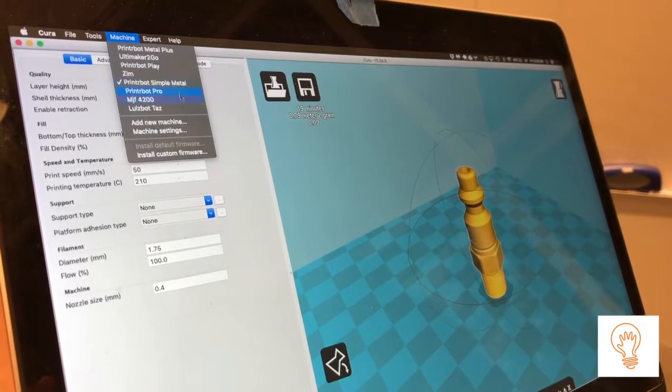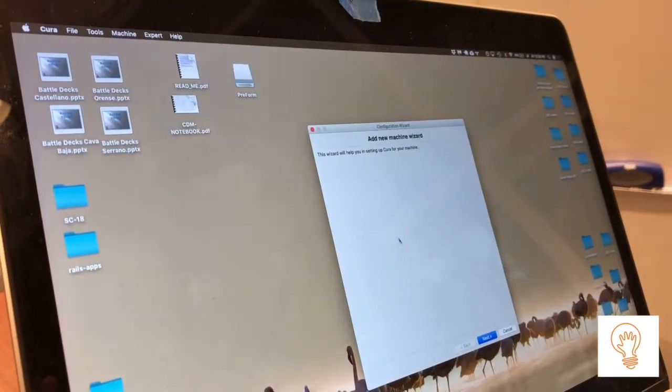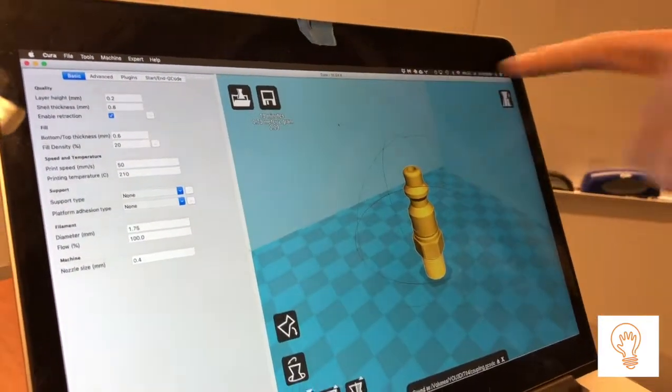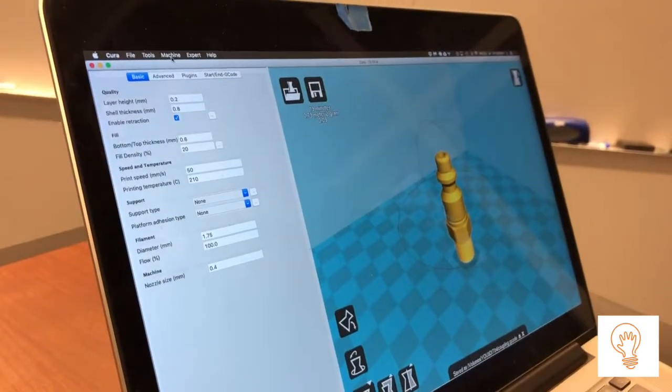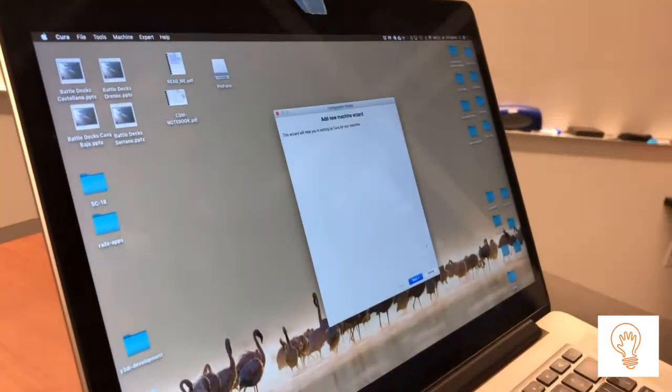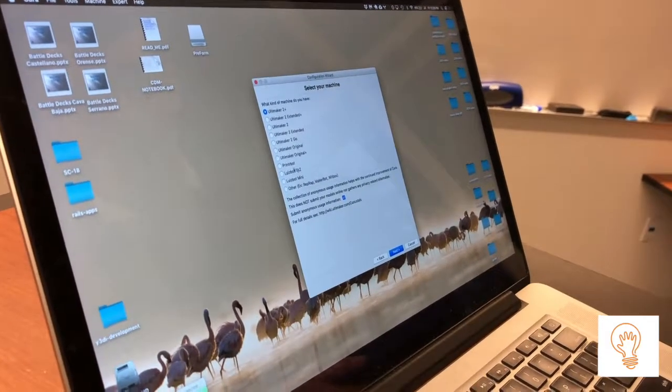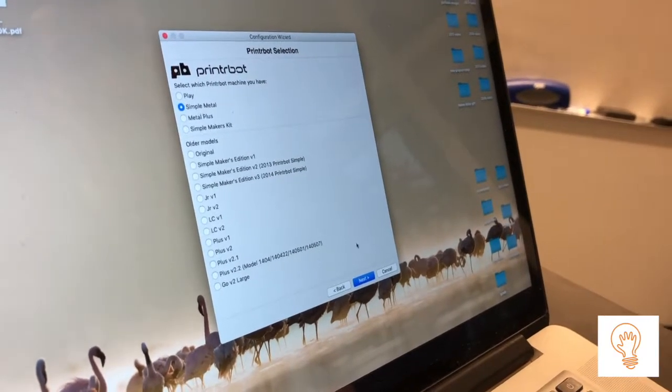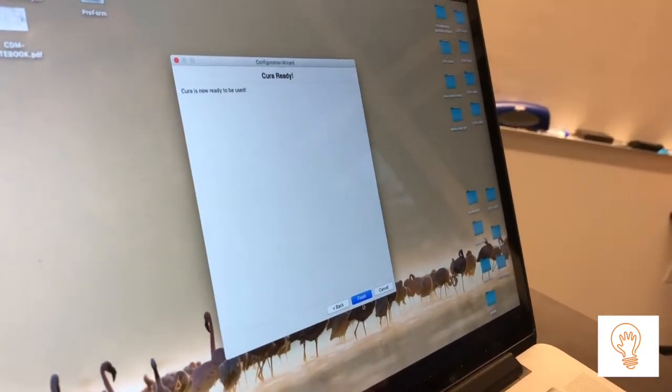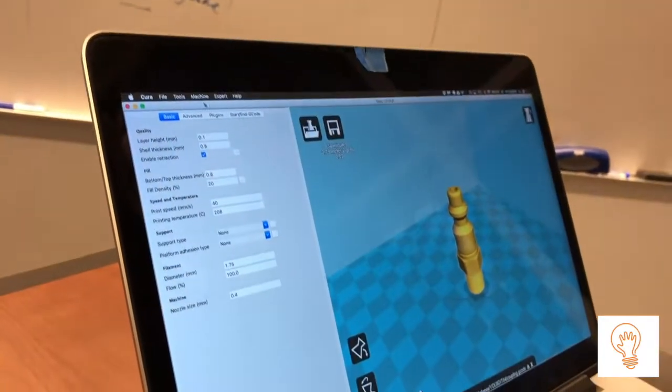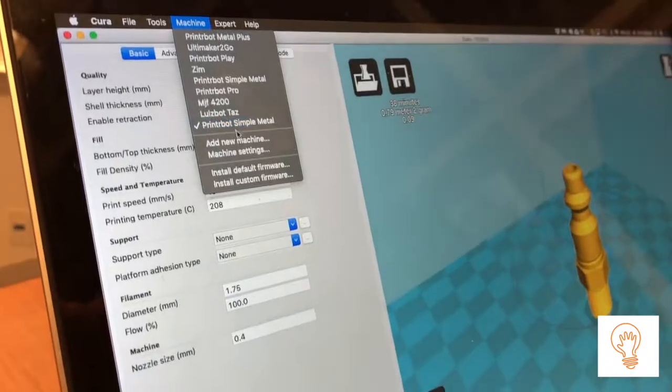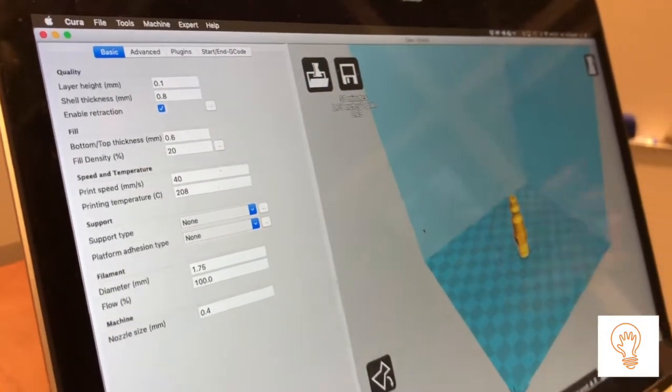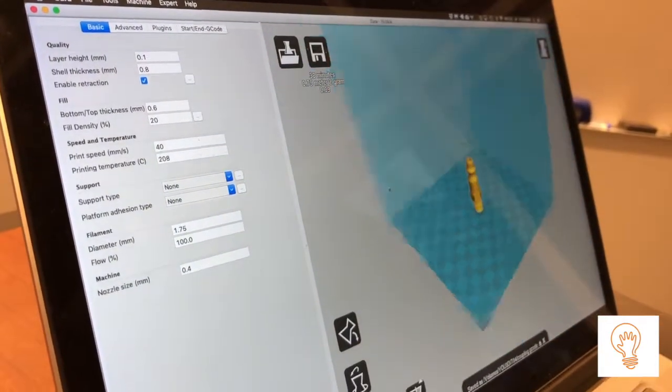If you don't have Printrbot Simple Metal, which you wouldn't have on a brand new installation of Cura, you'd have to go to add new machine. This is Cura 15.4.6, so this is the older view but it's a reliable view. We come here to add new machine, use the wizard, look for Printrbot machines, hit next, find Simple Metal, hit next, and then it says Cura is now ready to be used. You can see as you scroll out it's roughly the size of the build tray and everything looks good there.